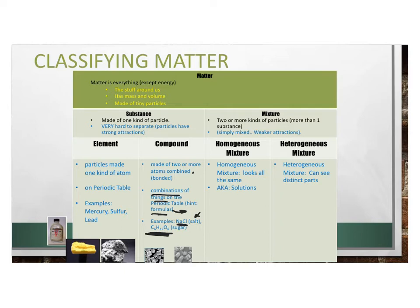Mixtures can also be separated into different categories: homogeneous mixtures or heterogeneous mixtures. The prefix homo means same, hetero means different. In a homogeneous mixture, it looks the same throughout — it's different particles mixed together, but at the microscopic level you could tell the difference. When you look at them at the human scale, it looks the same throughout. We also call homogeneous mixtures solutions.